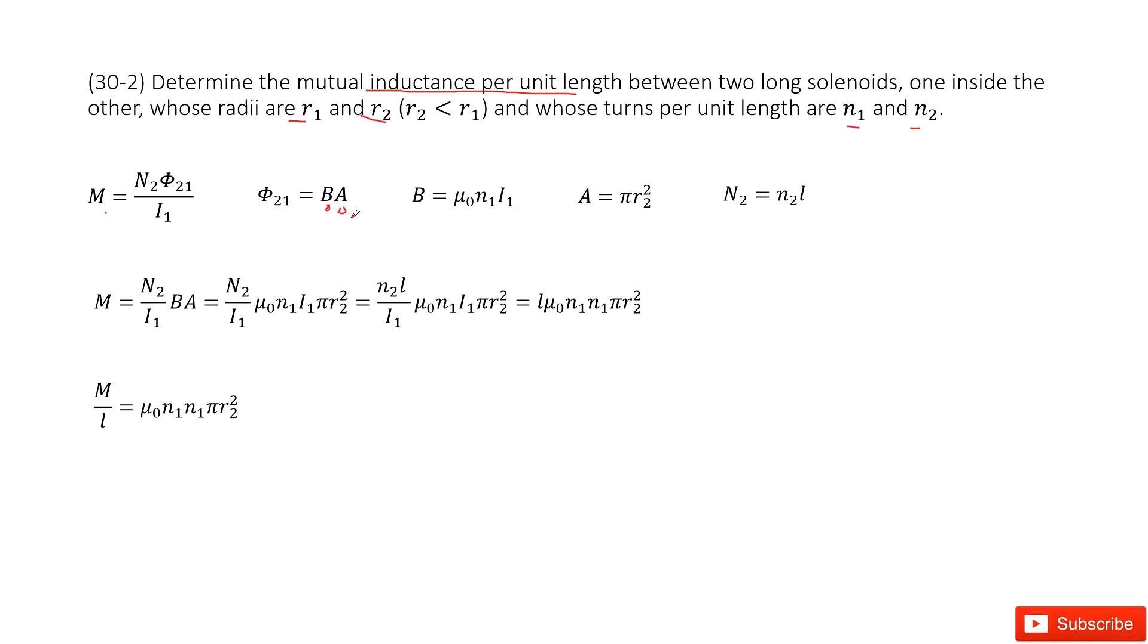A is the cross-sectional area of the second solenoid, R2. R2 is smaller than R1, so we write it as pi R2 squared.